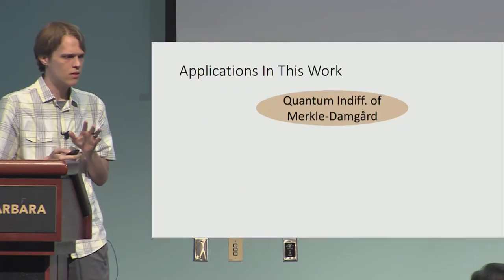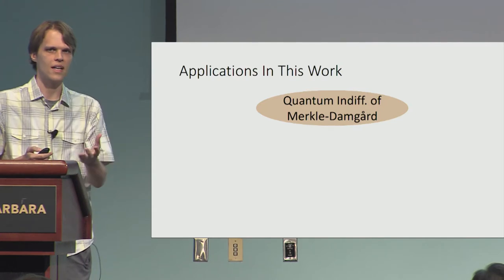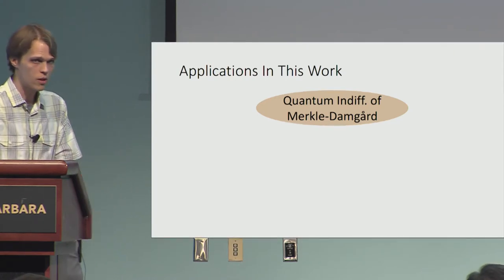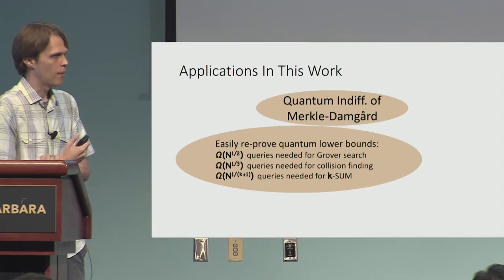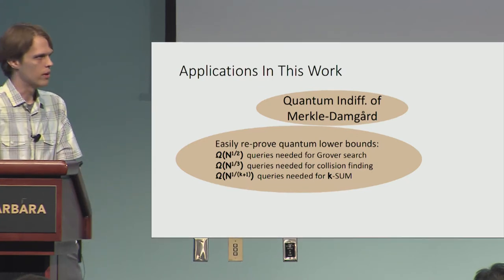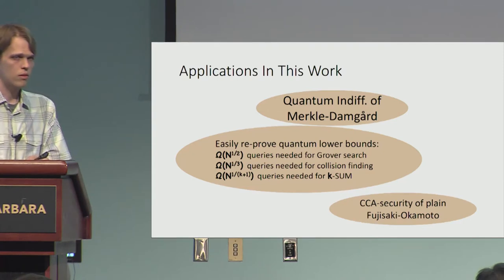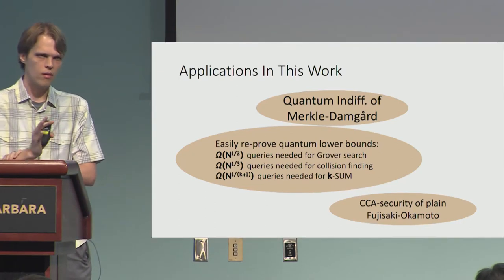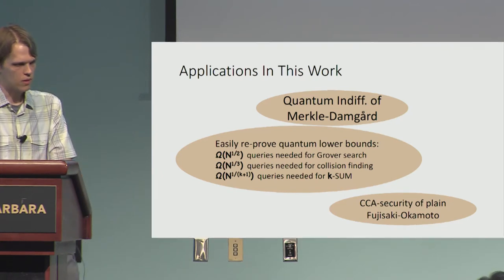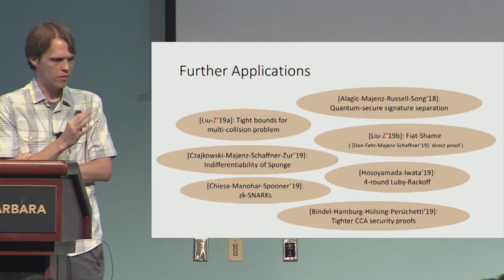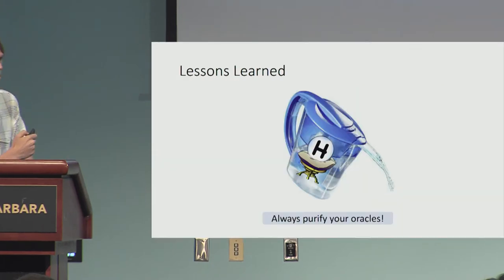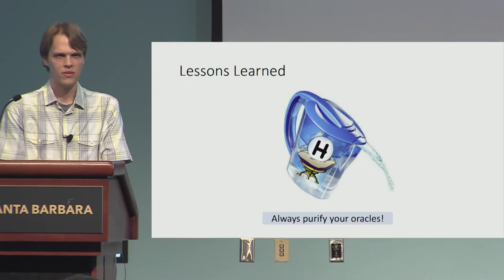Nonetheless, this technique is good enough for many applications. Coincidentally, it gives exactly the right information needed to do simulation for quantum indifferentiability of Merkle-Damgård. It turns out we can also reprove a lot of existing quantum lower bounds in a more unified and direct approach. We also show the CCA security of plain Fujisaki-Okamoto — there have been a number of variants proven secure, but we were able to show the original scheme is secure. Since this work there have been a number of follow-up works showing many more applications. So with that I'll conclude with the message: when working with quantum random oracles, always purify your oracle.